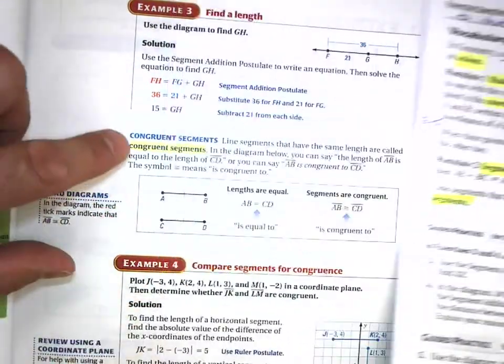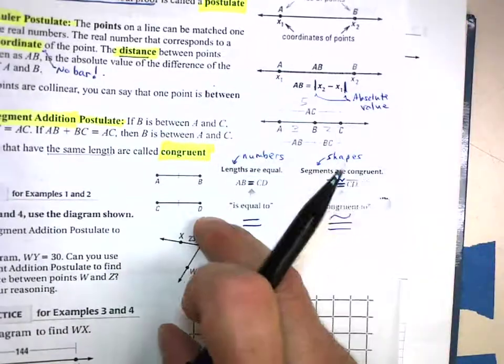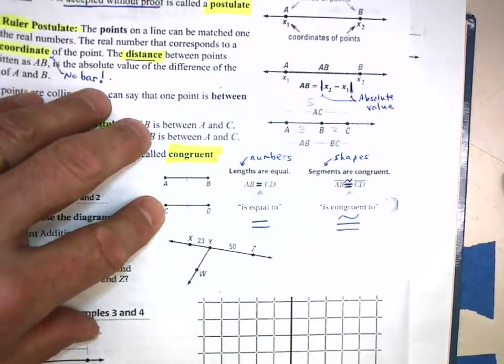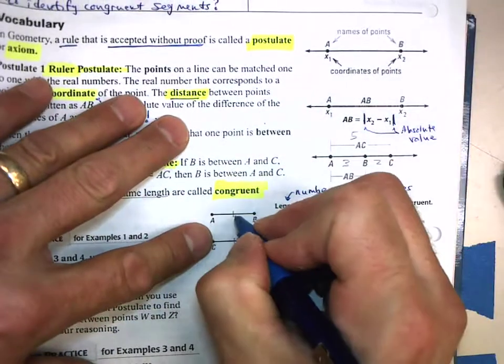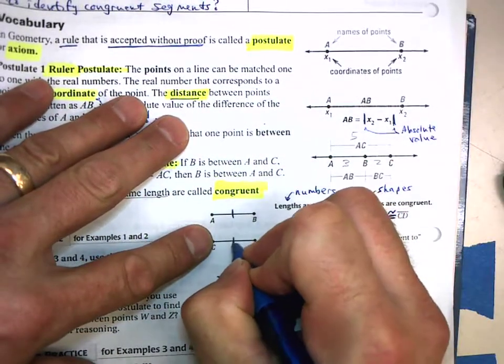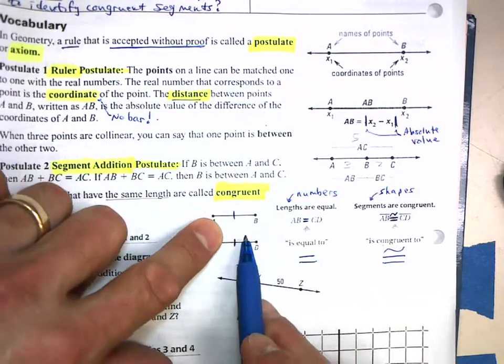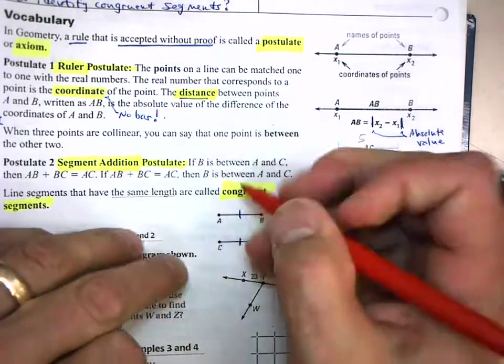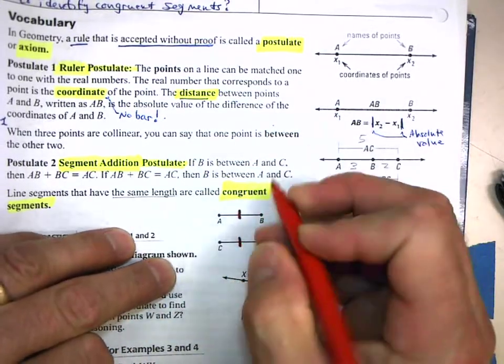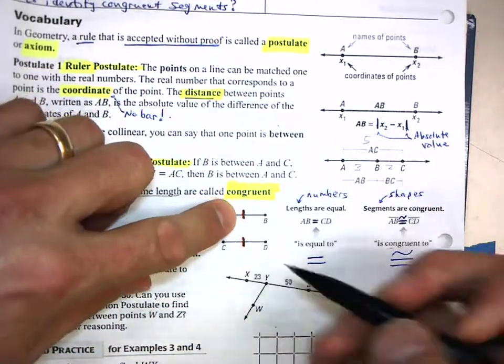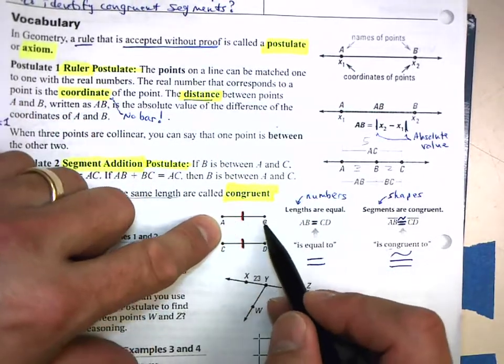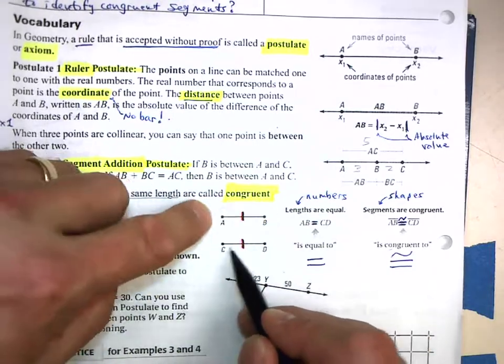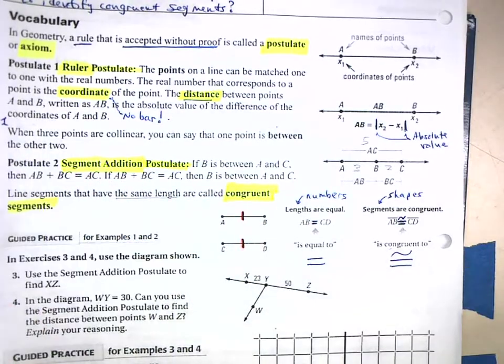Congruent segments. Let me emphasize this symbol—these two symbols mean congruent. This little symbol, those little tick marks tell us that these two segments are congruent with each other.